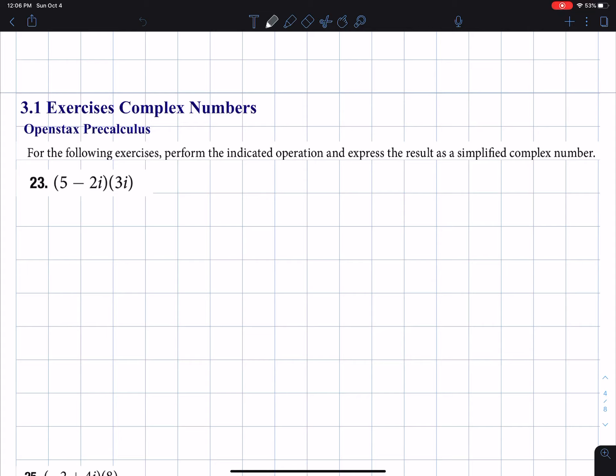We use the distributive property, and I just treat i the way I would treat a variable, but it's not a variable. We have that i is equal to the square root of negative 1, i squared is equal to negative 1.